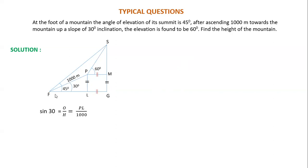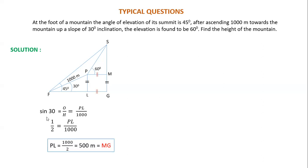Sin of 30 degrees — taking this angle in triangle PFL — sin 30 equals opposite upon hypotenuse. The opposite is PL and the hypotenuse is FL, which is 1000 meters. So sin 30 = PL/1000. Sin 30 is 1/2, so PL = 1000/2 = 500 meters. Since PL equals MG, MG is also 500 meters.